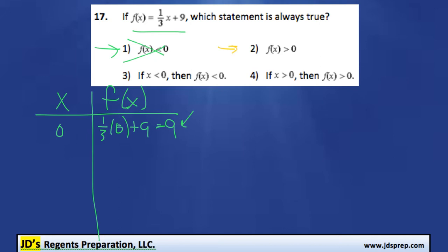For option 2, it's saying that f(x) > 0, that f(x) is always positive. We can disprove that by giving a really negative x value, like negative 100. If we did 1/3 times negative 100 plus 9, it's clearly going to be a negative number. So this is not true either.